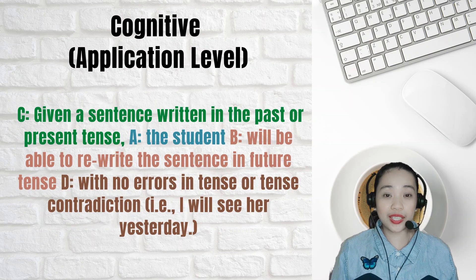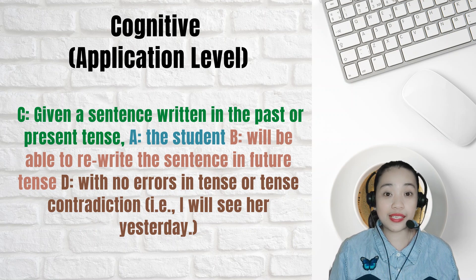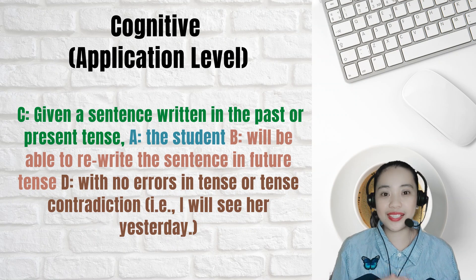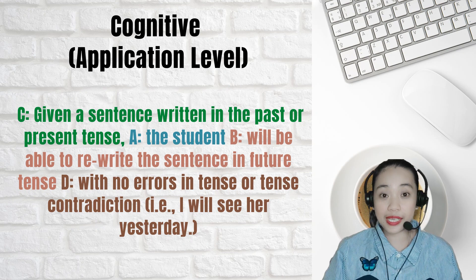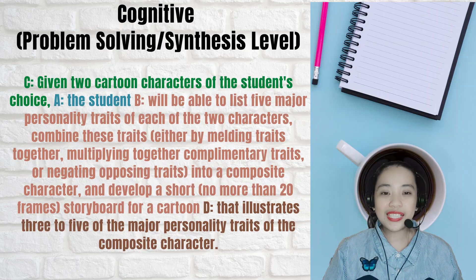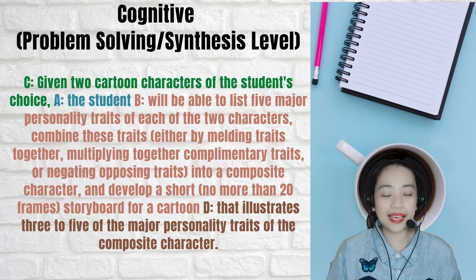Next example — cognitive, application level: Condition: given a sentence written in the past or present tense; Actor: the student; Behavior: will be able to rewrite the sentence in future tense; Degree: with no errors in tense or tense contradiction. Cognitive — problem solving or synthesis level: Condition: given two cartoon characters of the student's choice.